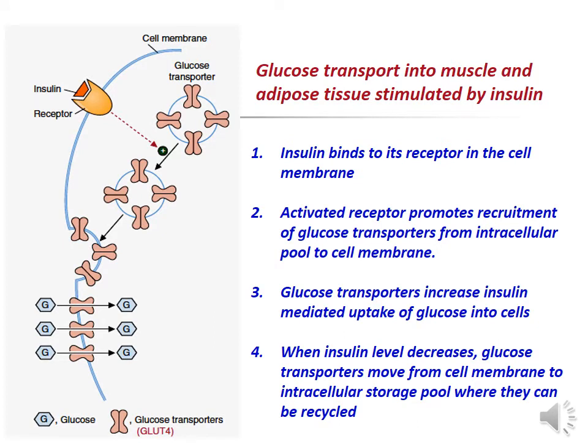The figure shows glucose transport into muscle and adipose tissue stimulated by insulin. Insulin binds to its receptor in the cell membrane. The activated receptor promotes recruitment of glucose transporters from the intracellular pool to the cell membrane. When insulin levels decrease, glucose transporters move from the cell membrane back to the intracellular storage pool where they can be recycled.